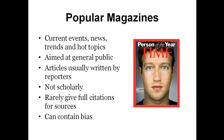A magazine is a collection of articles and images about diverse topics of popular interest in current events. Although magazines may cover serious material, they do not contain scholarly information. Since articles in magazines and newspapers have to be approved by an editor, they are usually more reliable than information found on websites. Keep in mind that popular articles do not usually include a list of references, so it can be difficult to find out where the author found their information. Also, articles written in popular magazines are written for a general audience and can contain bias.